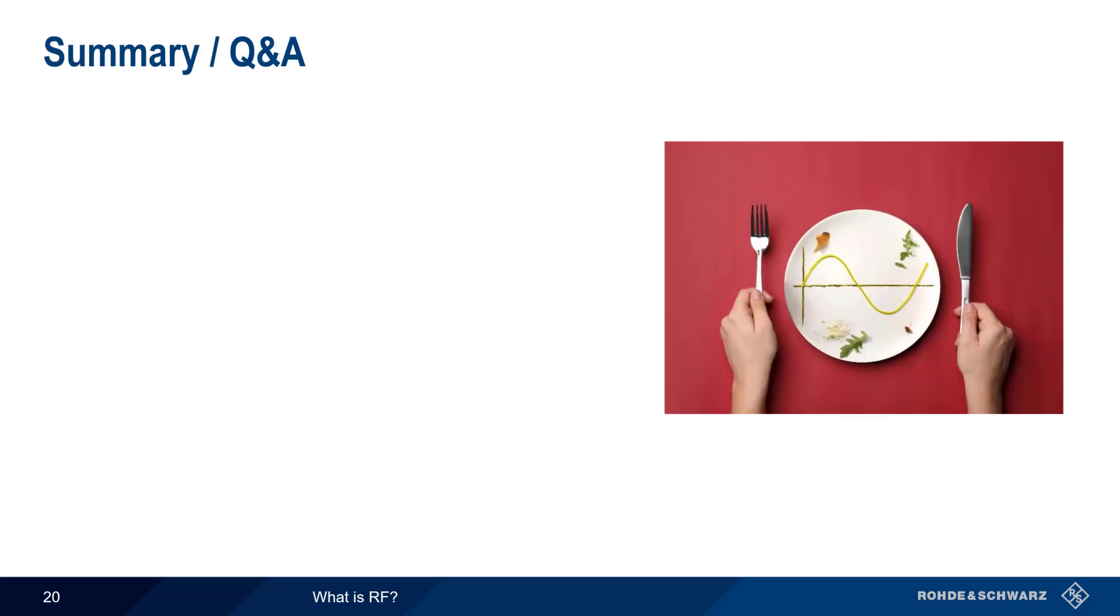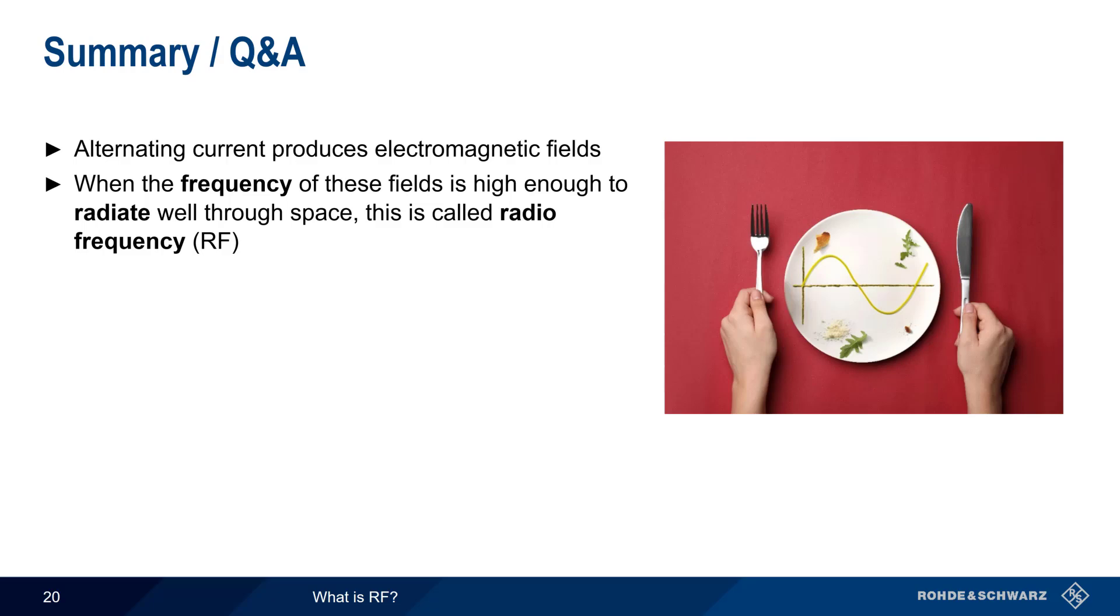Let's end with a brief summary of what we've covered. Alternating electrical currents produce electromagnetic fields. When the frequency of these fields is high enough to radiate efficiently through space, we refer to this as radio frequency, or RF. RF is used in three main areas. First and foremost, RF can be used to transfer information over long distances, without wires or cables, such as TV and radio broadcasts, satellite communications, cell phones, and Wi-Fi.